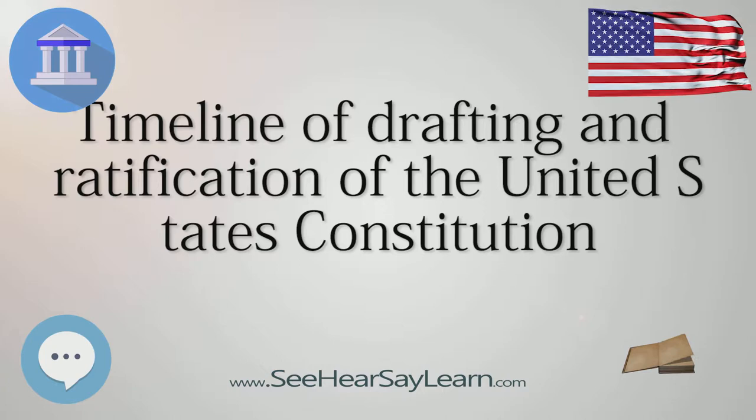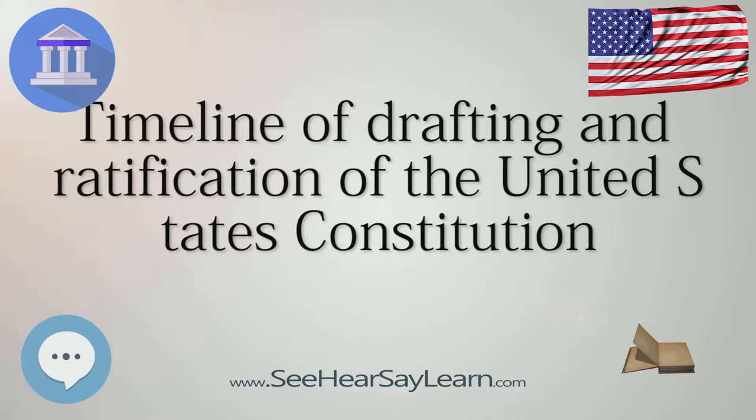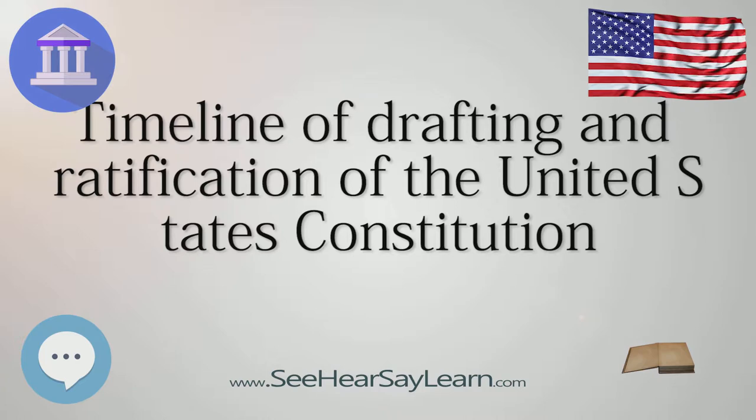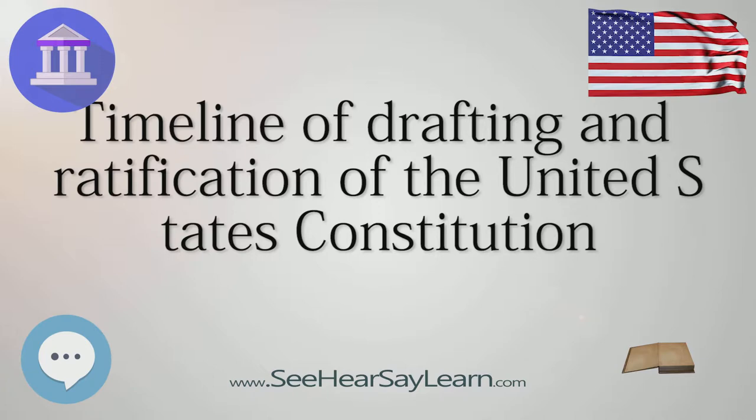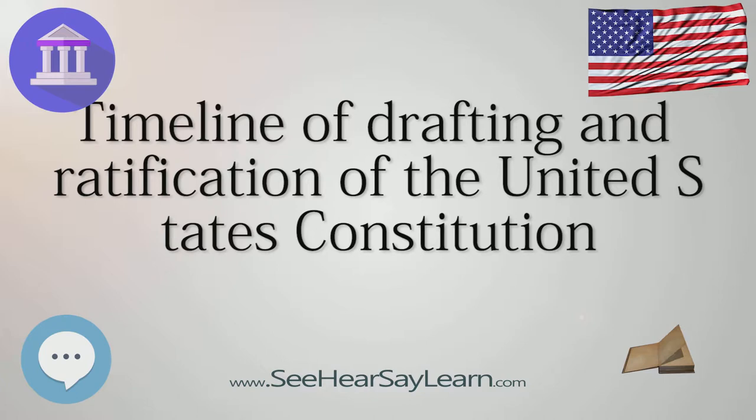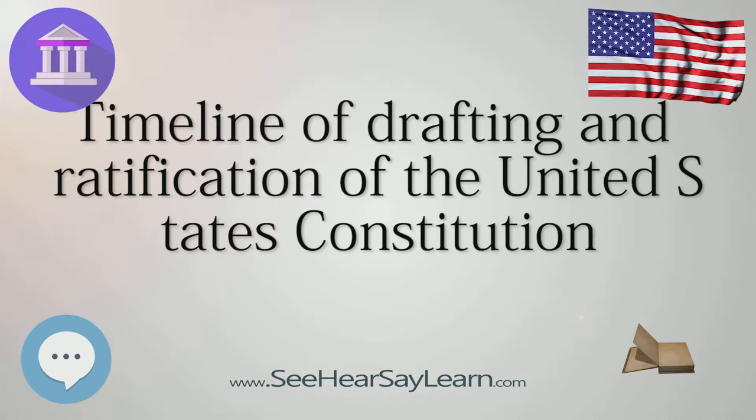August 31: A Committee of Eleven for Leftover Business, composed of Abraham Baldwin, David Brearley, Pierce Butler, Daniel Carroll, John Dickinson, Nicholas Gilman, Rufus King, James Madison, Gouverneur Morris, Roger Sherman, and Hugh Williamson, is selected to settle such parts of the Constitution as have been postponed and such parts of reports as have not been acted on.